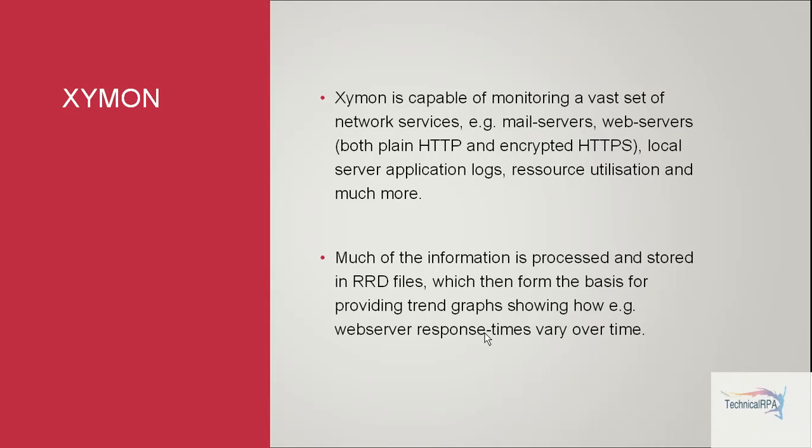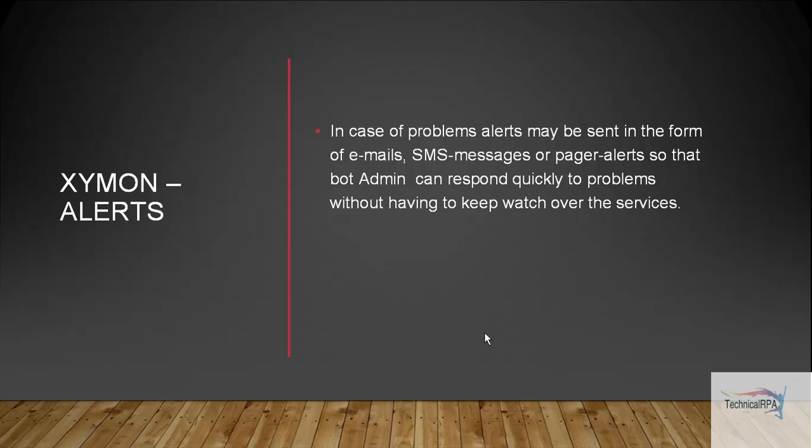Information is stored in RRD files, which form the basis for providing trend graphs showing how web server response time varies over time. The dashboard shows things like bot one being tracked somewhere due to a network issue, or bot two stuck somewhere due to an application issue. These kinds of graphs are provided by the Xamon server, and it will give alerts in case of a problem. Alerts may be sent in the form of emails, SMS, or page alerts — you can configure whatever alert type you need.